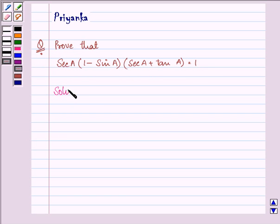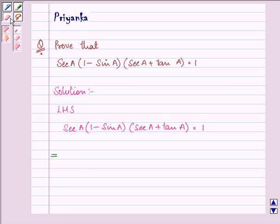So let us start with the left hand side of the question. We have secant A(1 minus sin A)(secant A plus tan A). Now we can write secant A as 1 upon cos A.